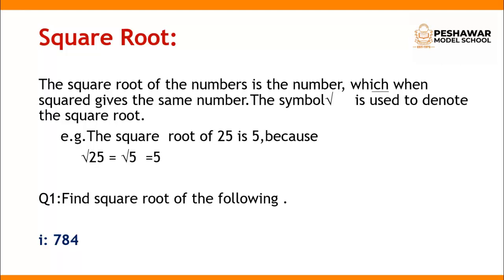Square and square root are the opposite of each other. Whenever we find the square of 5, the answer is 25, and whenever we find the square root of 25, the answer is 5.